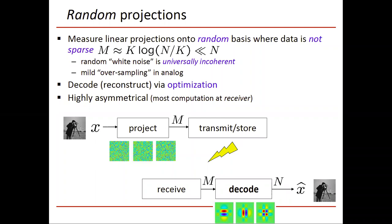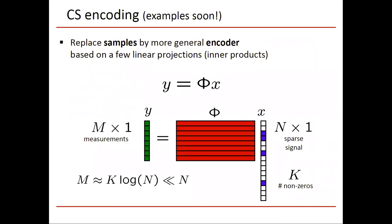So this is an asymmetric system with more computation at the receiver, but it might be better matched in many systems. Let's talk a bit about compressed sensing encoding and then compressed sensing decoding. These themes are going to be revisited in much more detail in future modules.